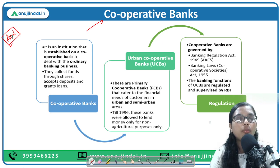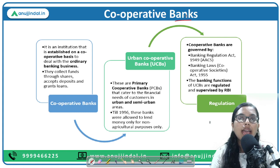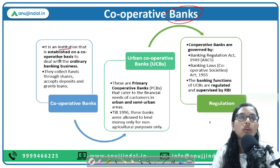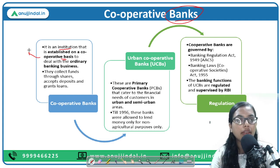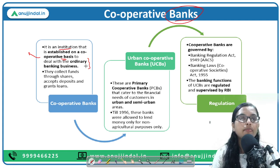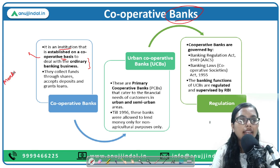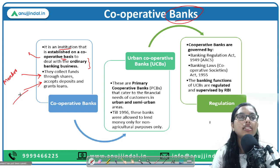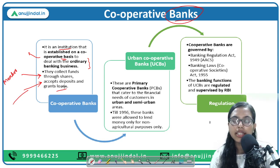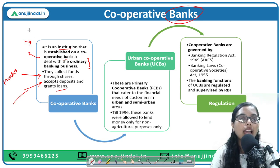From the cooperative structure, cooperative banks are derived. A famous example always given is Amul — a cooperative society where members pool their money. Cooperative banks are financial institutions established on a cooperative basis for mutual benefit, and since they are banks, they conduct the ordinary business of banking. They collect funds through members by issuing shares, accept deposits from other persons, and also grant loans to people in need.